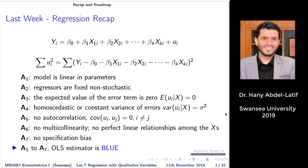If all these assumptions hold, then our OLS estimator is called BLUE: Best Linear Unbiased Estimator. Linear means the model is linear in parameters, which we explained last week.